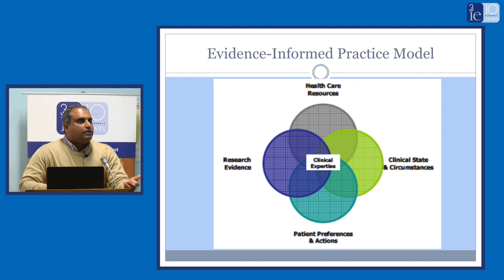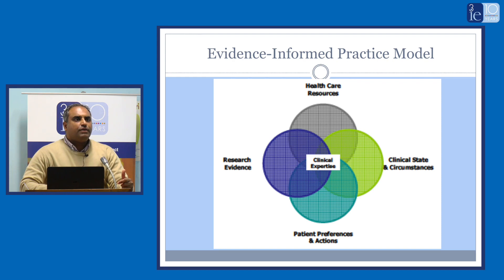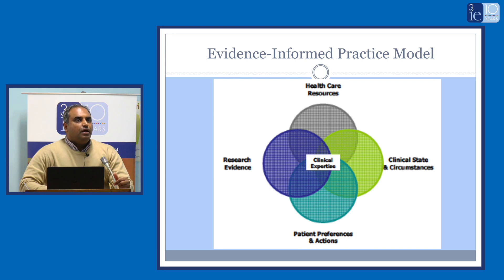Confirmatory bias is where the author already has a pre-existing notion and then tries to confirm results around that notion. We see a lot of this in clinical or public health research because researchers come from a certain clinical background and try to bound results within that framework. These are some aspects of why evidence-informed practice has become important.